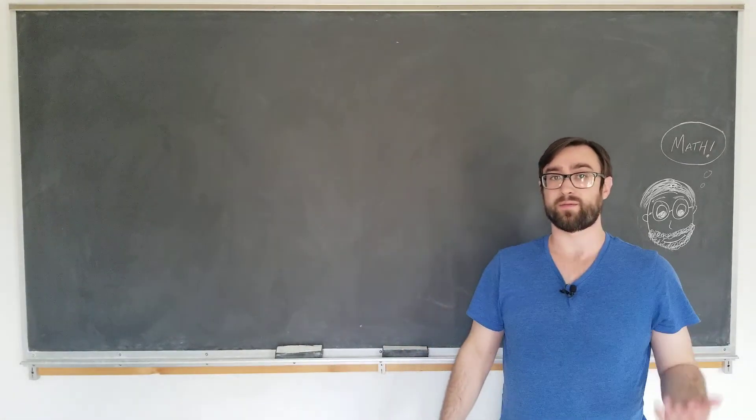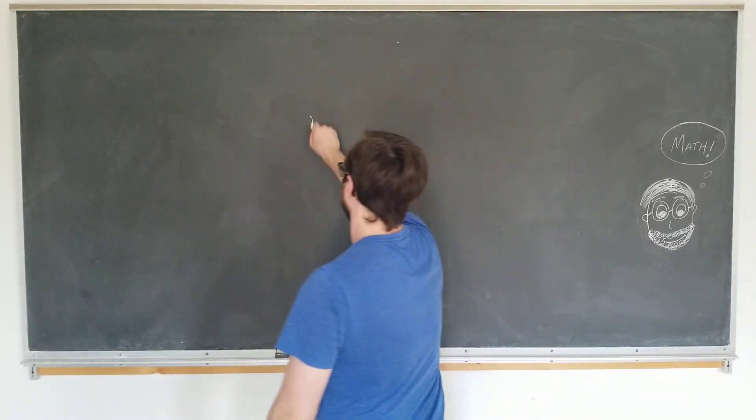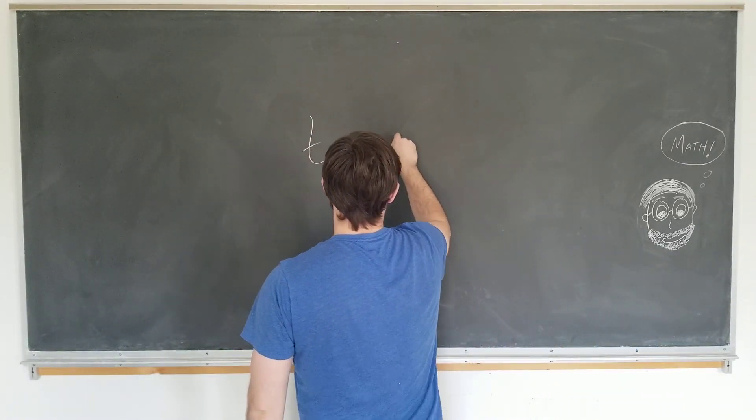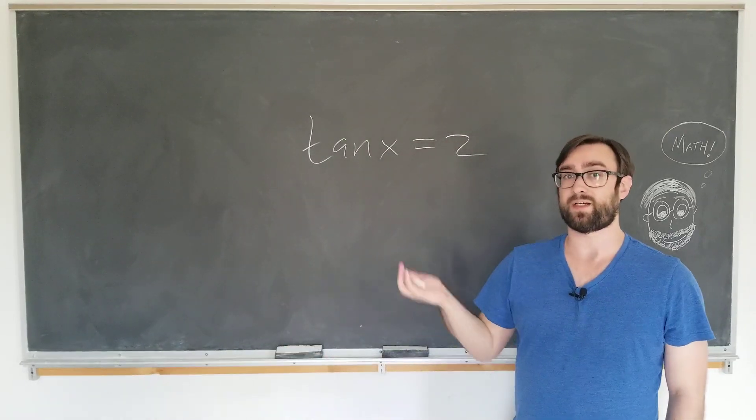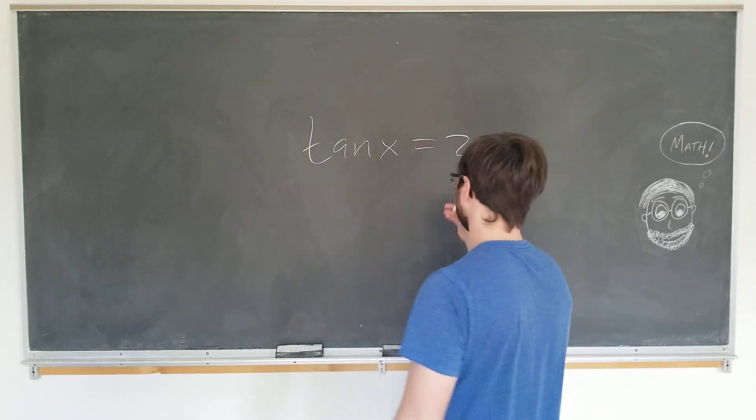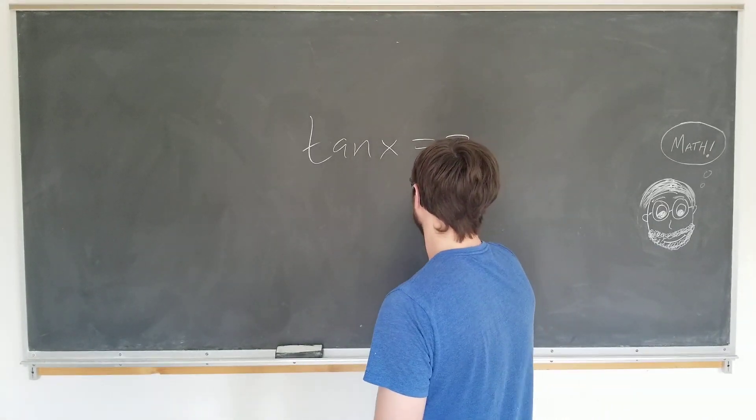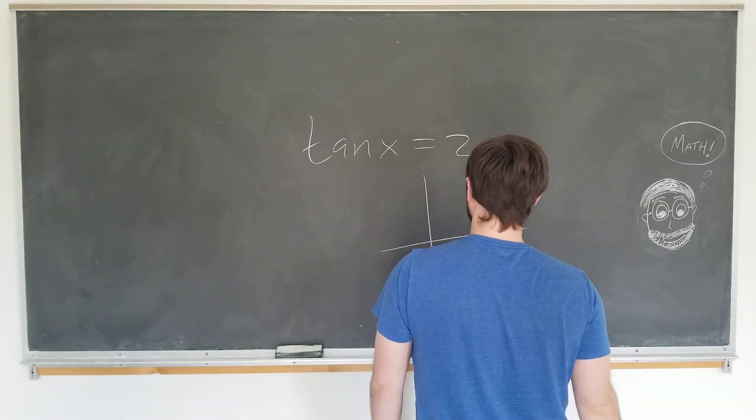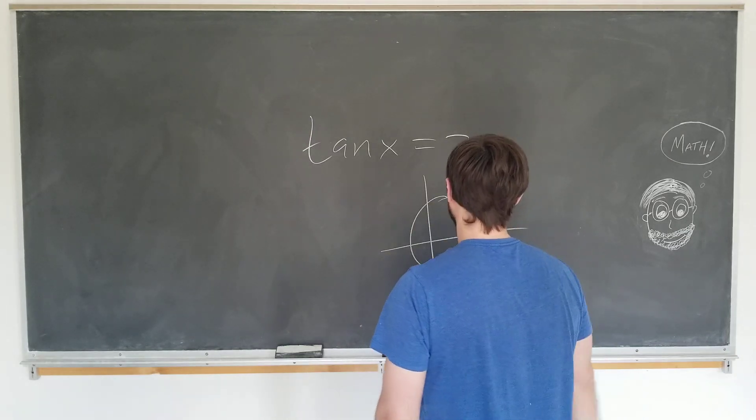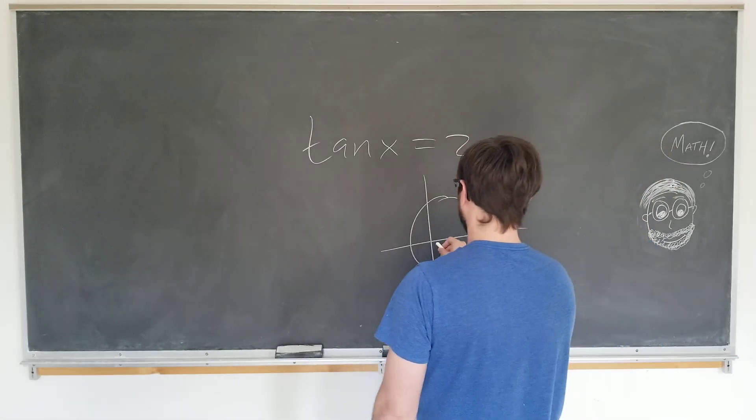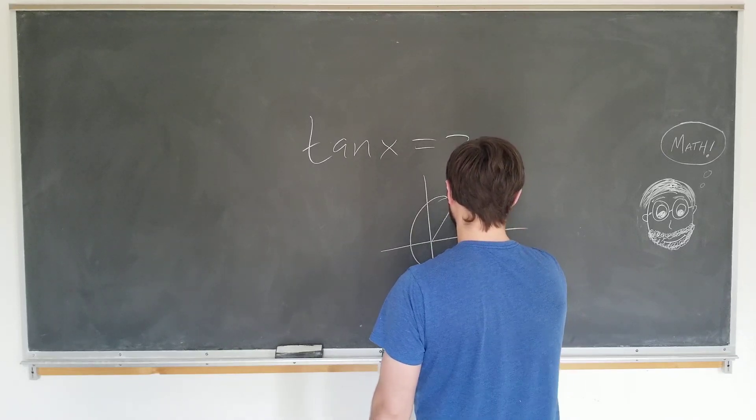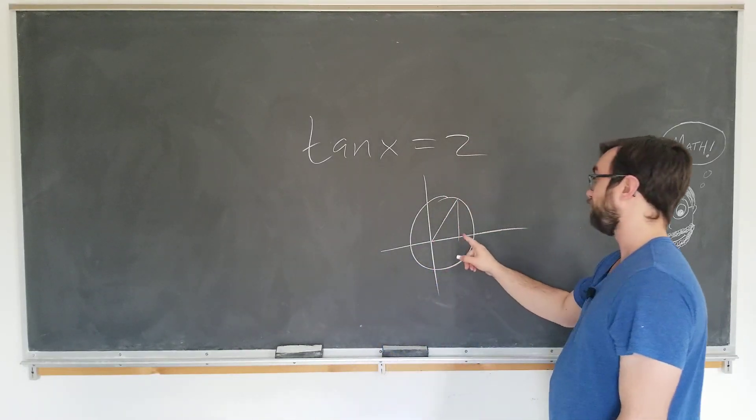So you might ask why I didn't motivate the previous video in the same way if I had tan of x equals 2, for example, then solve for x. Well, this actually has a real valued solution. Since for the tangent function, if you're on the unit circle, you can have an arbitrarily large output by considering a short triangle.